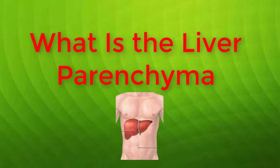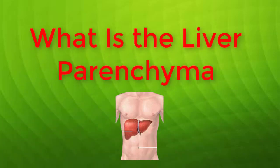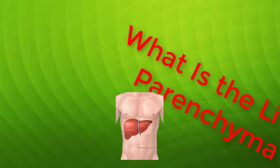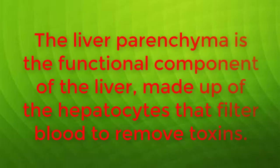The liver parenchyma is the functional component of the liver, made up of the hepatocytes that filter blood to remove toxins. This contrasts with the stroma, the connective tissue that supports the liver and creates a framework for the hepatocytes to grow on.